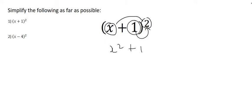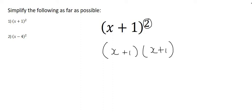What you need to do is when you see this little two here, it means there must be two brackets. You put the two brackets next to each other and then multiply them together.